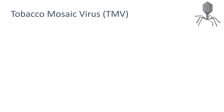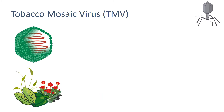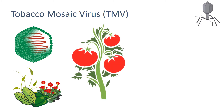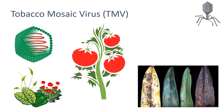Tobacco mosaic virus is a widespread plant pathogen that affects many species of plants including tomatoes. It gives a distinctive mosaic pattern of discolouration on the leaves, which affects the growth of the plant due to lack of photosynthesis.